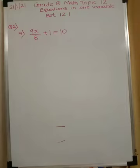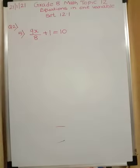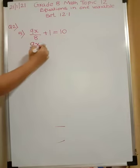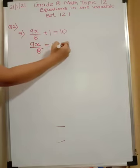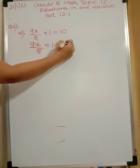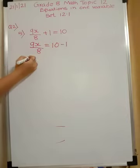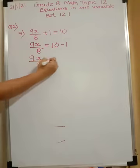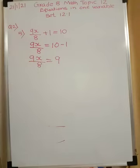So fifth problem, you have 9x upon 8 plus 1 is equal to 10. So I am shifting first 1 to that side. So I will get 9x upon 8 is equal to 10 minus 1. Plus 1 will become minus 1. So 9x upon 8 will be equal to 9.